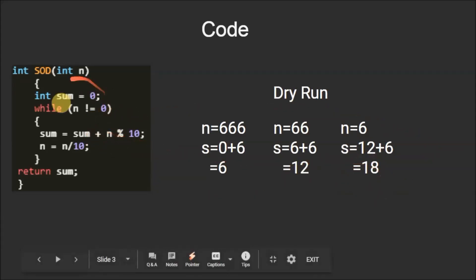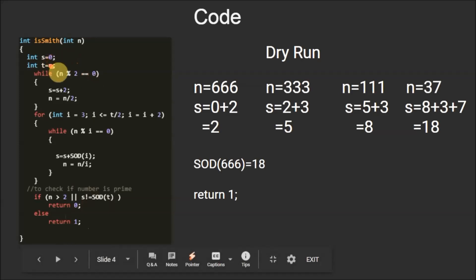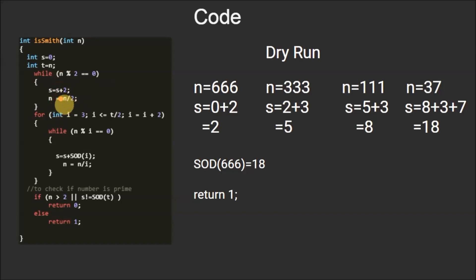Now this is the main code of the problem. We have a function `isSmith` that returns 1 if the number is a Smith number and 0 if it is not. We have a variable `s` initialized with 0 to store the sum of the prime factors, and a variable `t` used to temporarily store the value of n. Then we have a while loop that adds 2 to the sum as many times as 2 is a factor of the original number, with condition n mod 2 equals 0, adding 2 to the sum and updating n to n divided by 2.